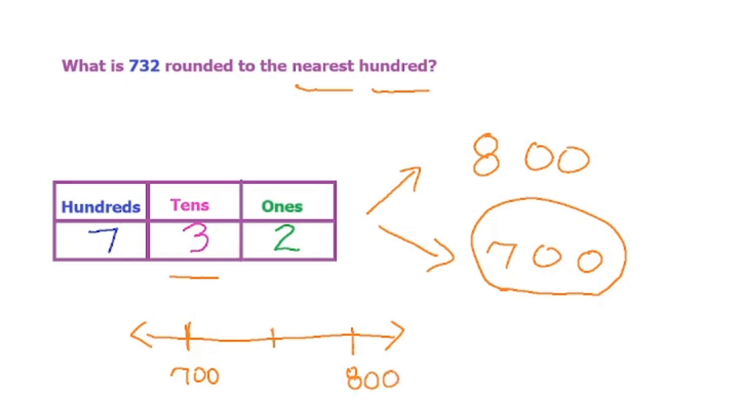In the middle would be about 750, right? So 732 is less than that, it probably sits around here somewhere. So 732 is closer to 700 than it is to 800, it's further away from 800. If we round to the nearest hundred, the answer would be 700.